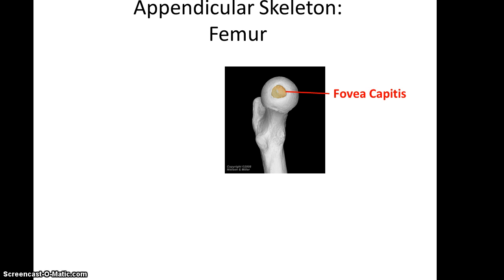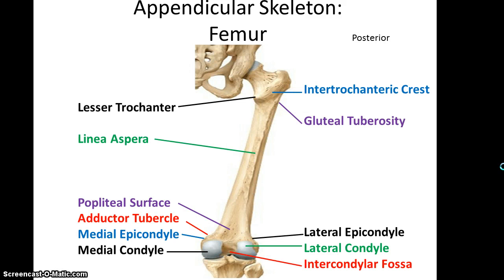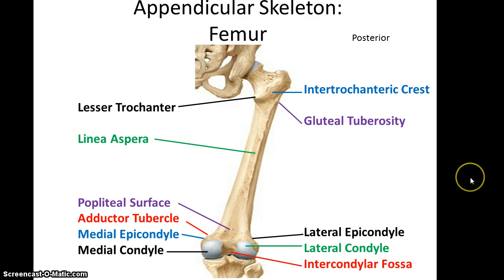Looking straight on to the head of the femur, you'll see a depression referred to as the fovea capitis. On the posterior end you can see the lesser trochanter, the intertrochanteric crest — which is much bigger and broader than the intertrochanteric line on the anterior side — leading up to the greater trochanter. A bit distal from the intertrochanteric crest is the gluteal tuberosity, a small lump, which flows into the linea aspera, a long rough line going down the shaft of the femur.